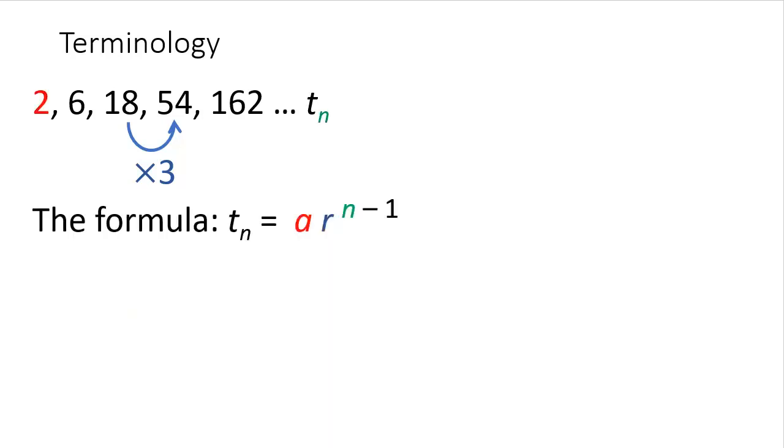And we would use this formula. So we define the term n along in terms of the starting value, that common ratio, and the distance along.